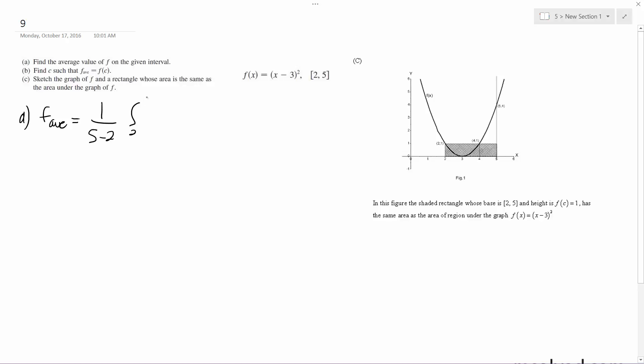Integrating from two to five of x minus three squared dx. All right, so what's going to happen here is...